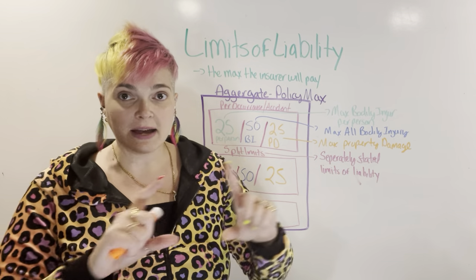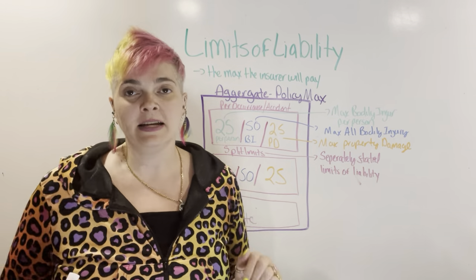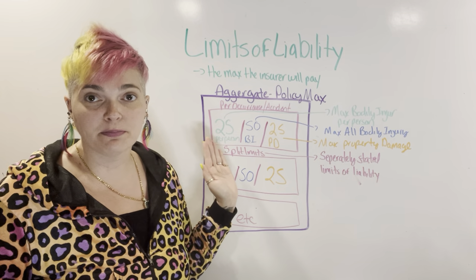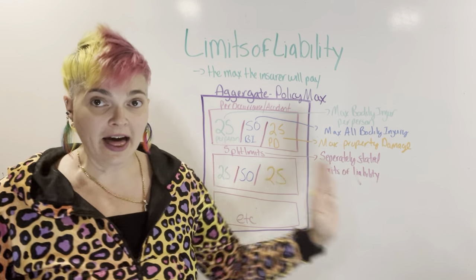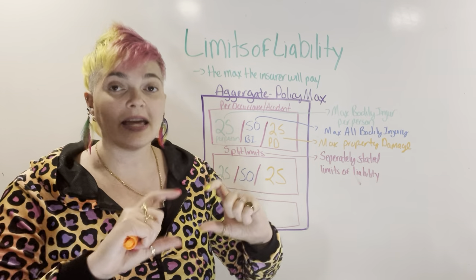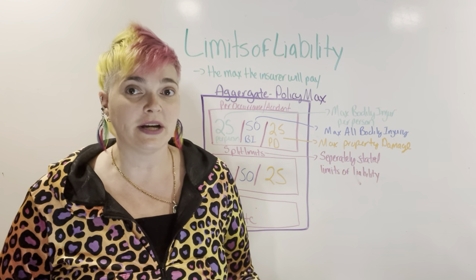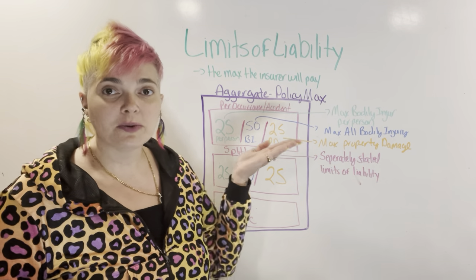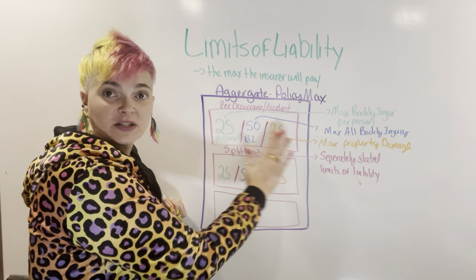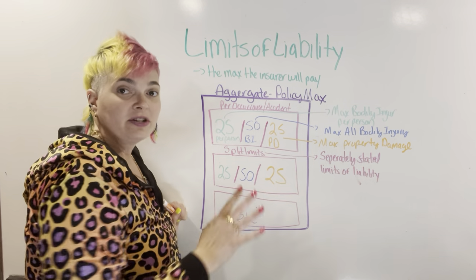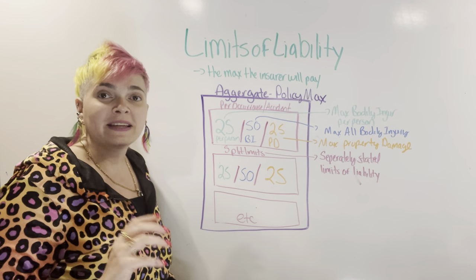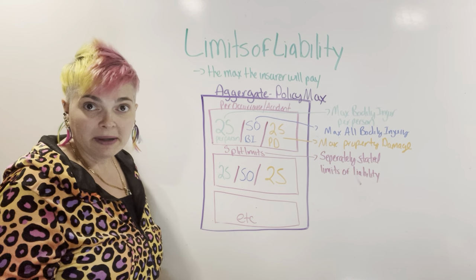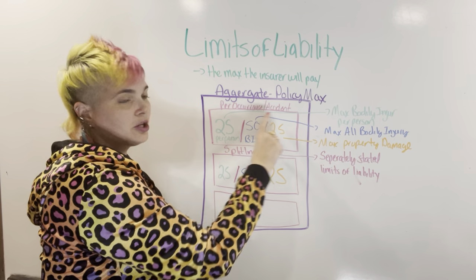Inside the aggregate is a per accident limit, so each accident gets its own limit as well. A very common number for that is $25,000/$50,000/$25,000. This is Part A — this is liability, covering other people. Every time you have an accident, you're allowed to take that limit for that accident. That's the per occurrence — how much is available for each accident that you have.